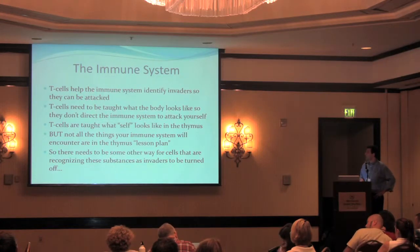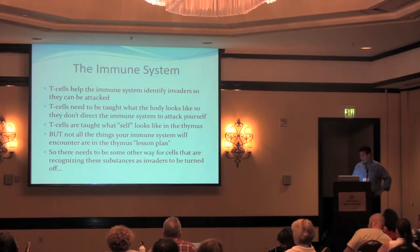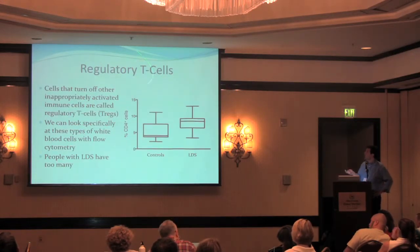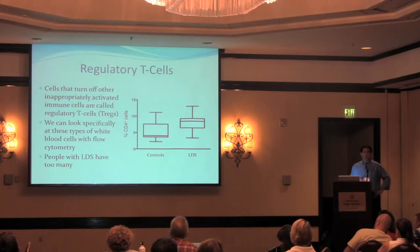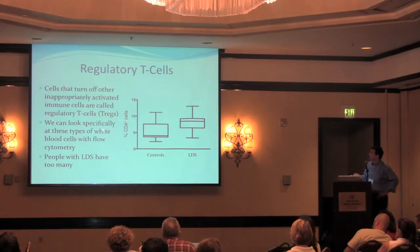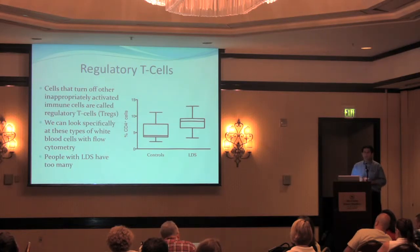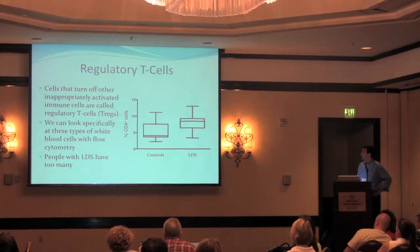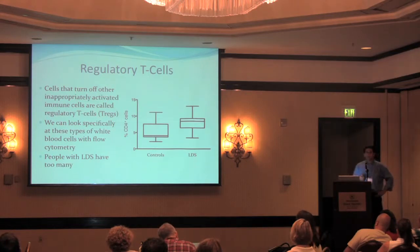There needs to be some other way for cells recognizing harmless substances to be turned off. Those cells are called regulatory T cells — Tregs — and they're the traffic cops of the T cells. Their job is to find cells that are doing bad things, attacking your own body or attacking things they're not supposed to, and turn them off. White blood cells have little flags on them, and we look at these flags using an instrument called a flow cytometer to tell what kind of white blood cell it is. Interestingly, we found that people with Loeys-Dietz syndrome actually have too many regulatory T cells, which is the opposite of our hypothesis.